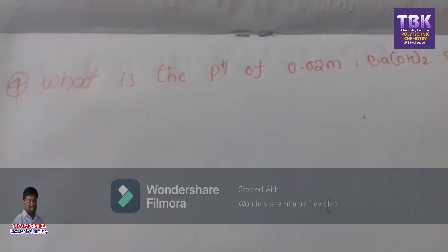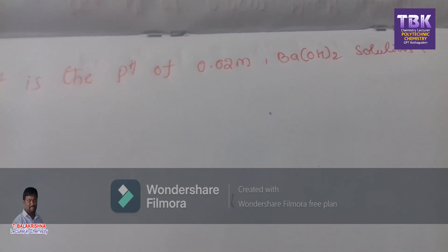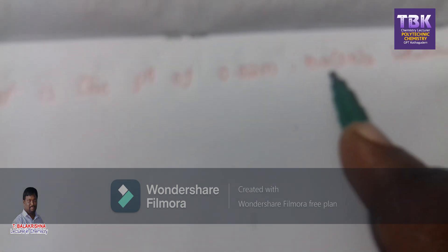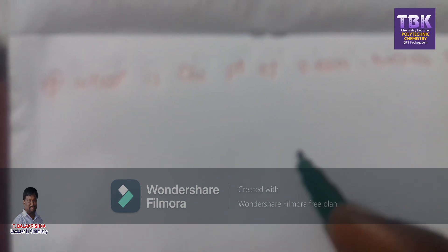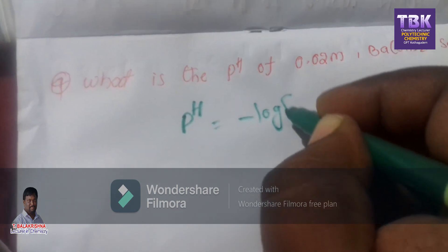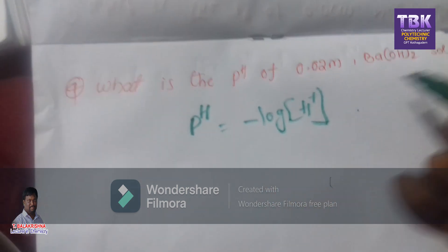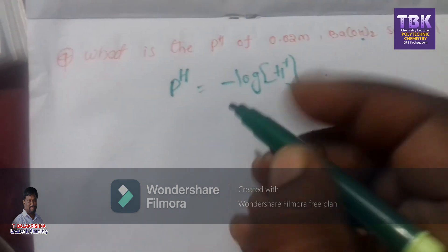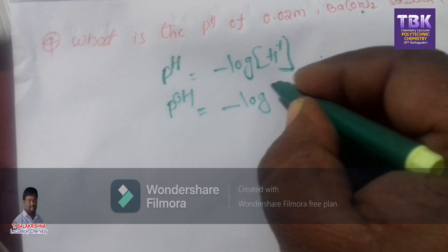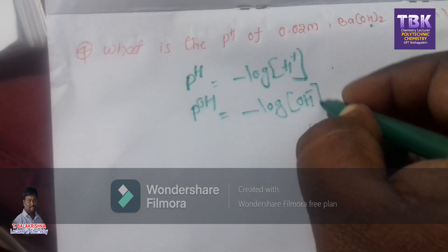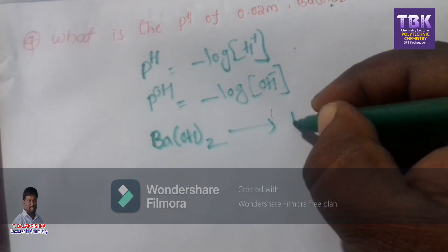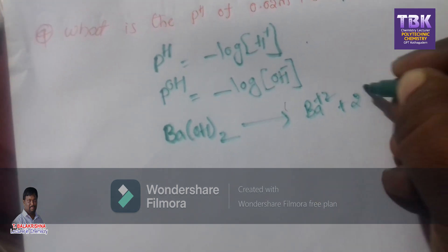Next problem: what is the pH of 0.02 M barium hydroxide solution? Barium hydroxide is a base. So pH can be found using pOH first. pOH = minus log of concentration of OH⁻ ion. Find the OH⁻ ion concentration from the ionization reaction: Ba(OH)₂ splits into Ba²⁺ plus 2OH⁻. So OH⁻ concentration is 2 × 0.02 = 0.04.